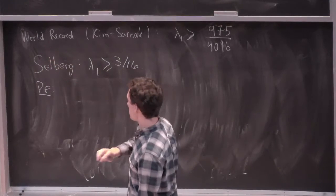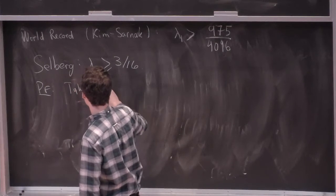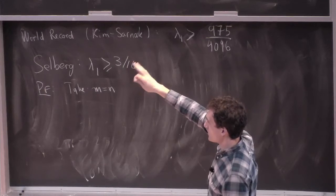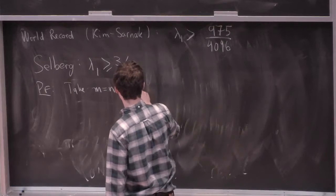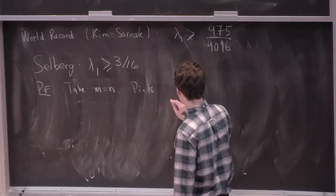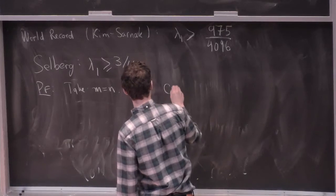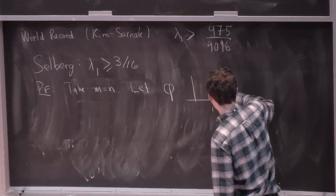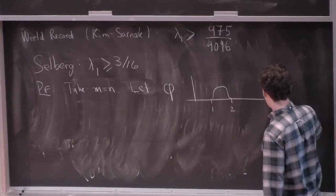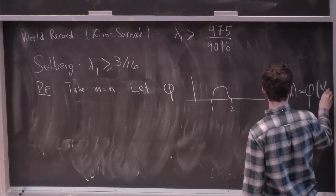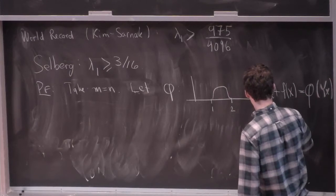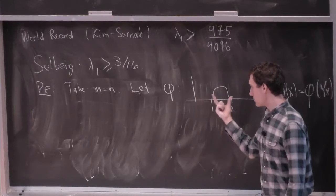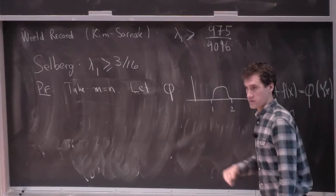So I think the record towards this conjecture, so world record, is by Kim and Sarnak, who showed that λ₁ is at least 975/4096. So it's getting pretty close to 1/4, but we're still not there yet. So just as an application of this Kuznetsov formula, I'm going to sketch Selberg's kind of first result towards this conjecture. So Selberg, long before this, showed that this first eigenvalue was at least 3/16. And you can use this Kuznetsov formula to prove that. So here's the proof in brief.